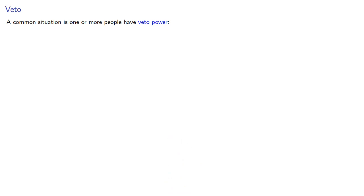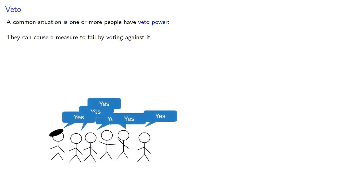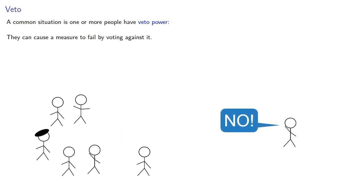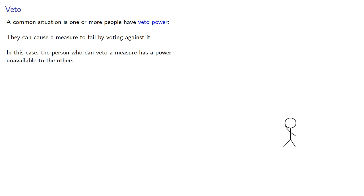A common situation is one or more people have veto power. They can cause a measure to fail by voting against it. In this case, the person who can veto a measure has power unavailable to the others.